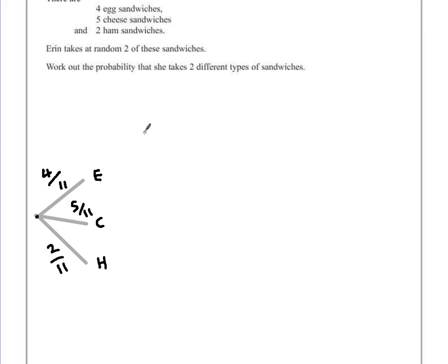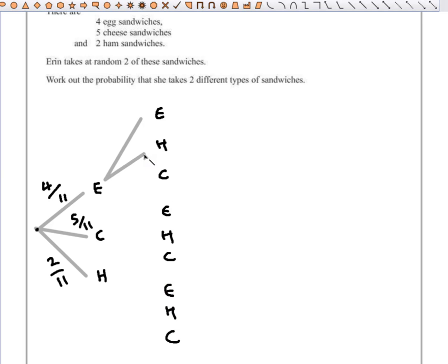Here's where things can get a little bit confusing. Because after she's chosen one egg sandwich, she could then for a second sandwich choose egg, ham, or cheese. The same thing after choosing a cheese sandwich — she could choose egg, ham, or cheese. And if she chose ham first, she could still choose egg, ham, or cheese. So each branch is now separated into three different parts.